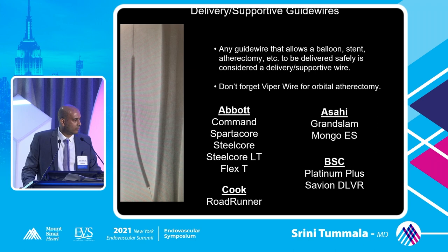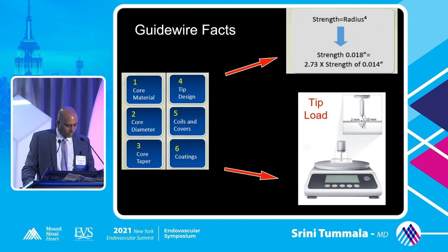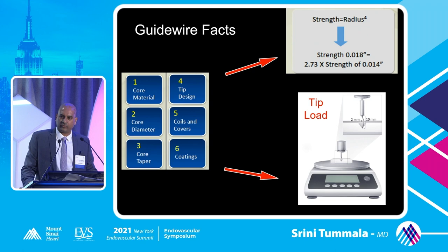There are two guide wire facts worth highlighting. First, think about guide wire escalation moving from 0.014 to 0.018. The formula is radius to the fourth power — you are increasing the strength of that guide wire almost three times when you escalate from 0.014 to 0.018. When tackling a FEMPOP CTO, this really makes a difference in pushability, torqueability, and so forth.